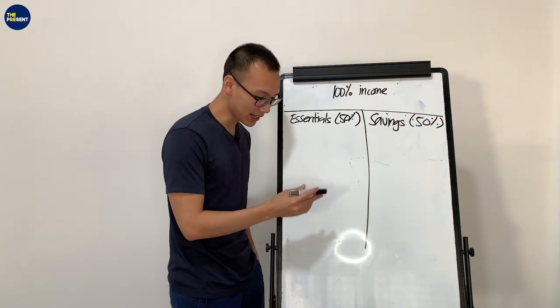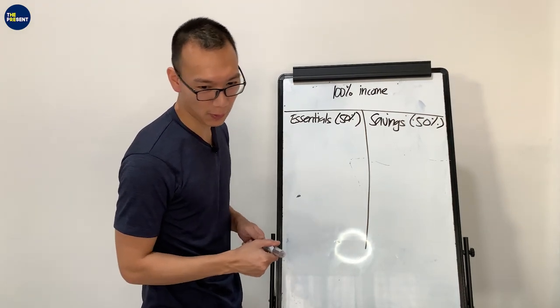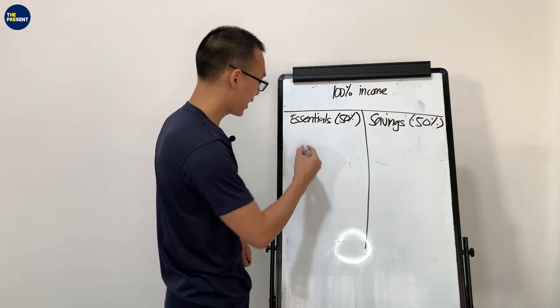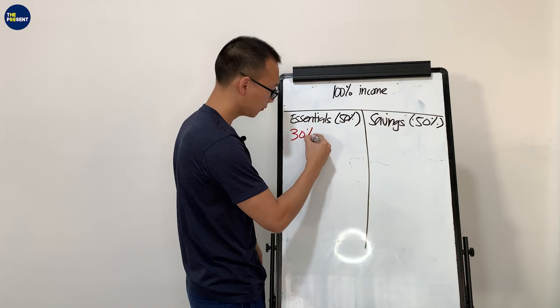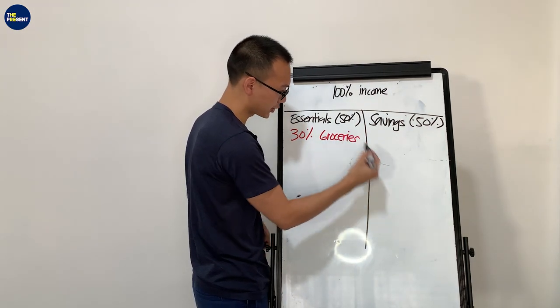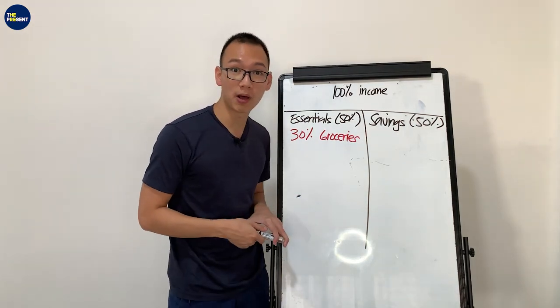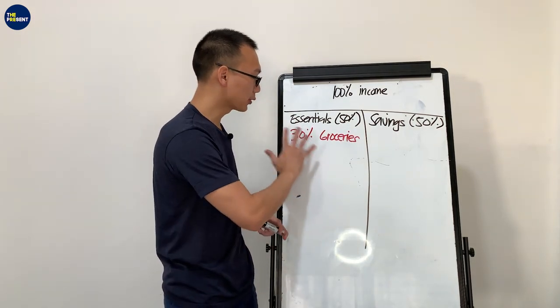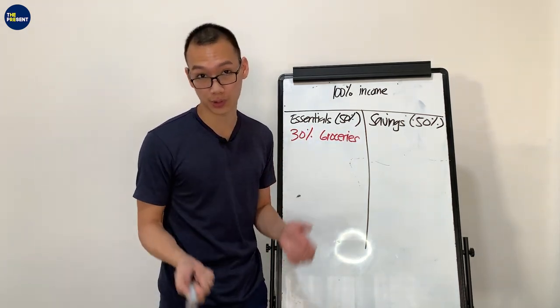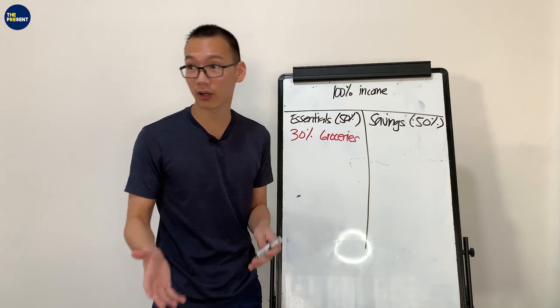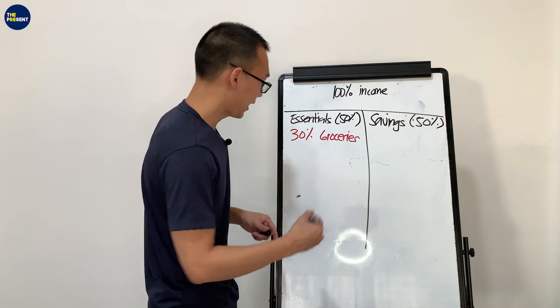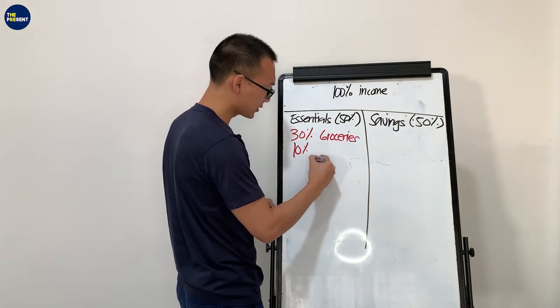Are you ready? Here we go. So from the 50% essentials, 30% of that goes to our groceries. By the way, I'm referring to this on a monthly basis. So 30% of the money that we are allocating for our essentials goes to our groceries, our food, our water, or whatever it is that we need to have in order for us to survive.